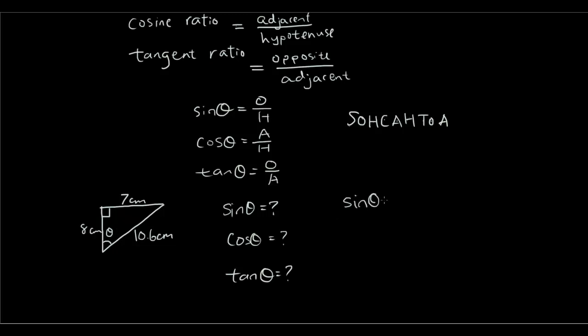So all you do is you write down the equations. The sine ratio is opposite over hypotenuse, which is the opposite side, which is 7. So you're going to label the sides 7. And the hypotenuse is 10.6.